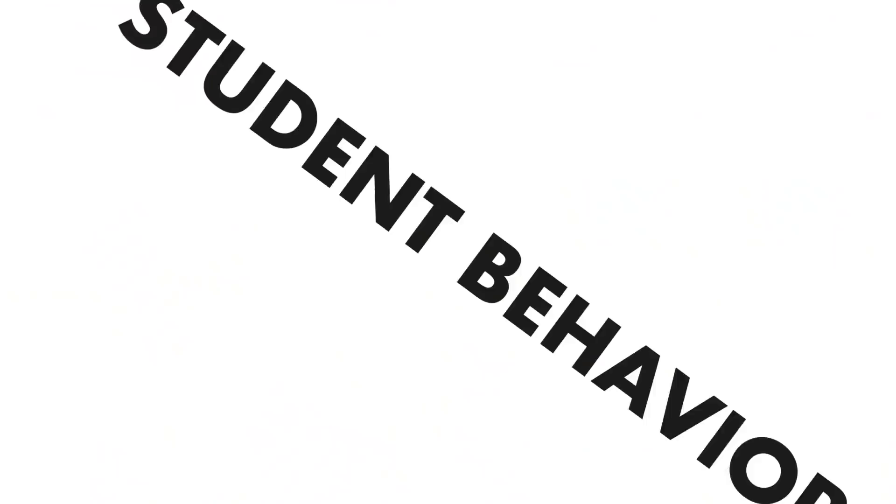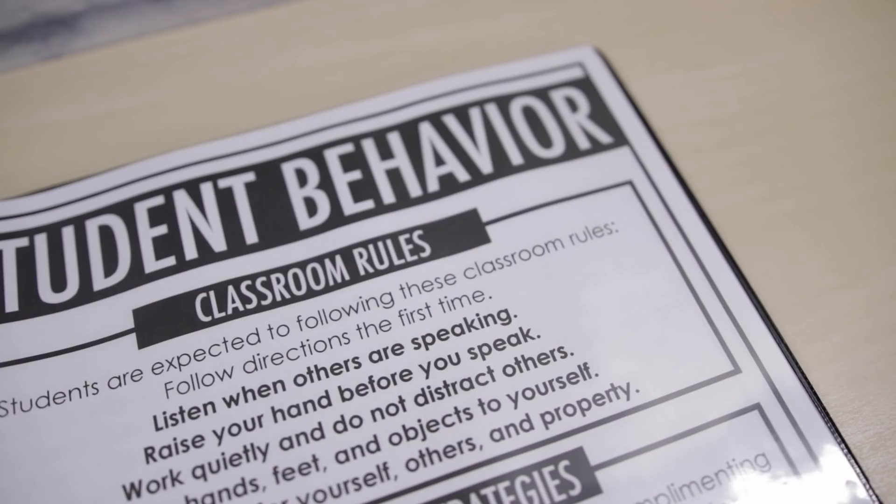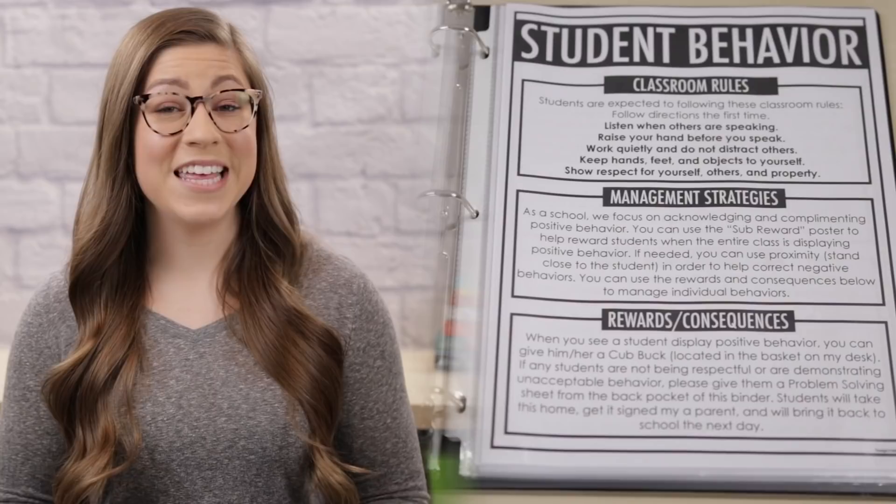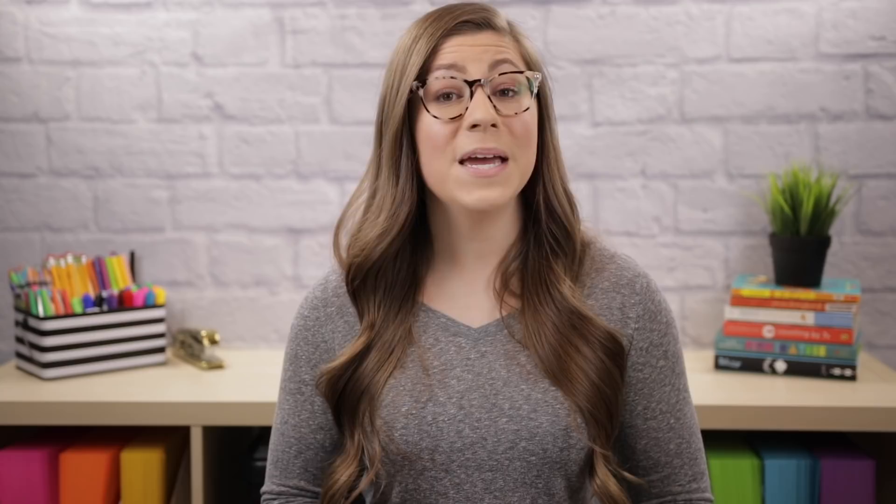The next page is for student behavior. It's super important to communicate your expectations for behavior along with any rewards or consequences you use, because you want the substitute to keep things as consistent as possible. I include a list of my classroom rules, management strategies the substitute can use, and rewards and consequences they can utilize. If you're going to have the substitute use a specific incentive system, put those directions directly on this page. If you mention a specific consequence like a problem-solving sheet, make sure you include copies of that in the sub binder so they have them handy.